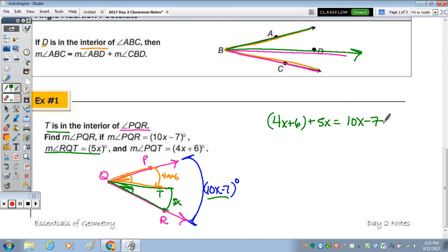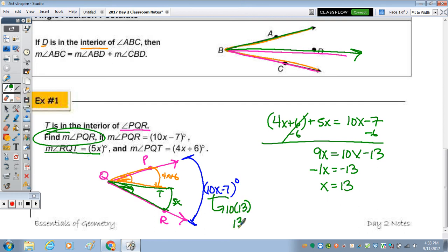So let's solve for X, and then we can go back and find the measure of PQR. So I'm going to subtract the 6 first, and I'll show you why. As I subtract the 6, I can combine that 4X and 5X, which are like terms. So 9X equals 10X minus 13. Subtract the 10X. 9 minus 10 is a negative 1X. Negative 13 divided by negative 1, and X is 13. So substituting back into the algebraic expression that represents PQR, which is right here, we have 10 times 13, which is 130, minus 7 is 123 degrees.